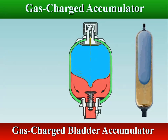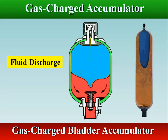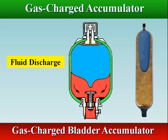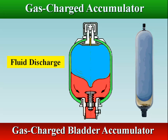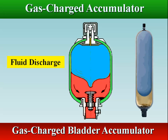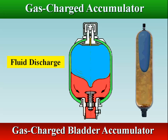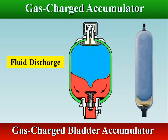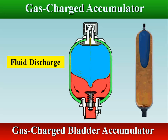When the hydraulic pressure external to the accumulator drops below the pressure inside the accumulator, the compressed gas forces oil from the accumulator and the gas expands as the oil exits, until the pressure inside the accumulator and the pressure external to the accumulator are equalized.